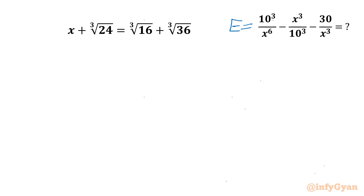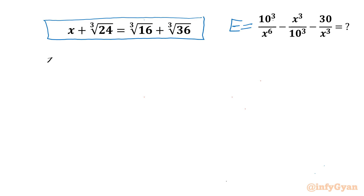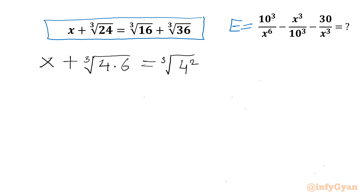The given equation is x + ∛24 = ∛16 + ∛36. Let us rewrite it as x + ∛(4×6) on the left-hand side. On the right-hand side, 16 is 4² so we write ∛(4²), and 36 is 6² so we write ∛(6²).